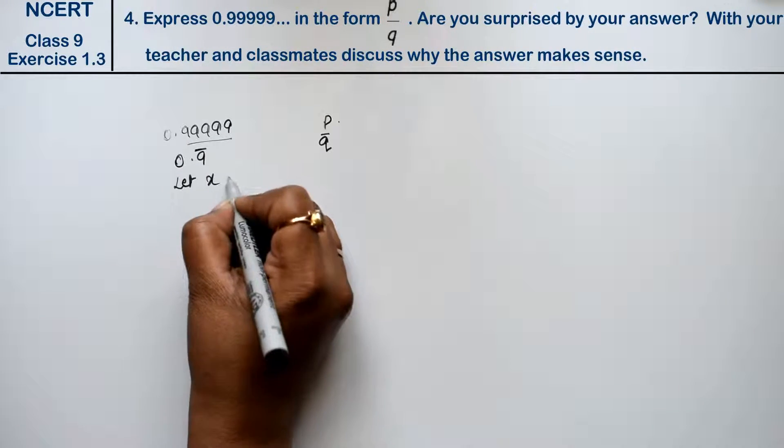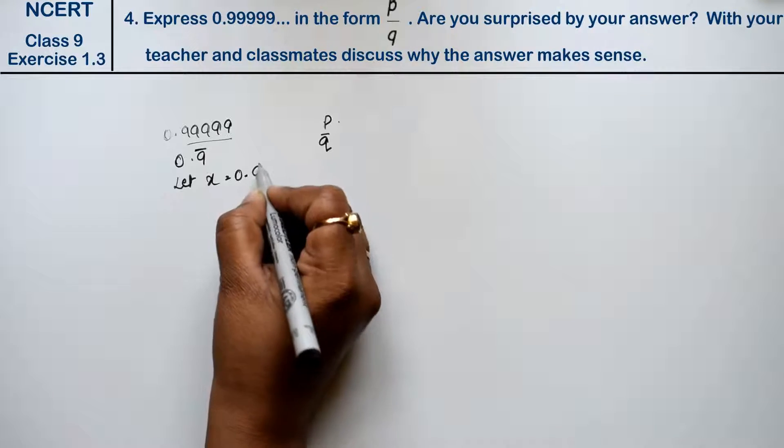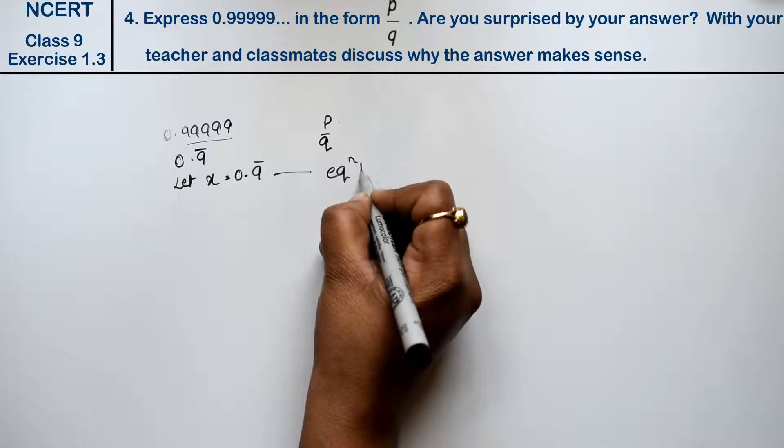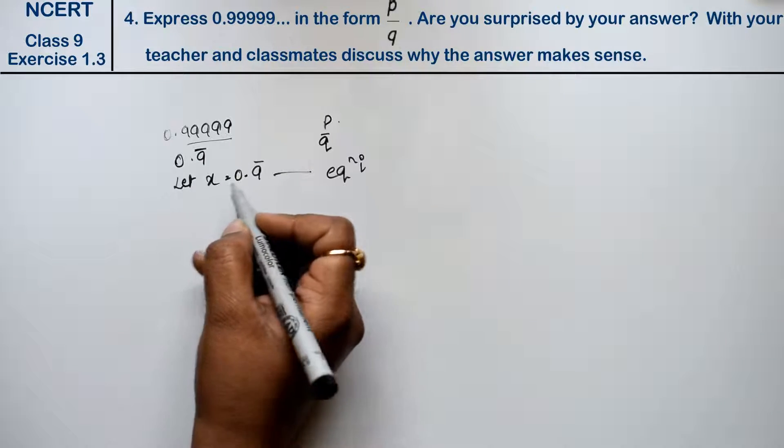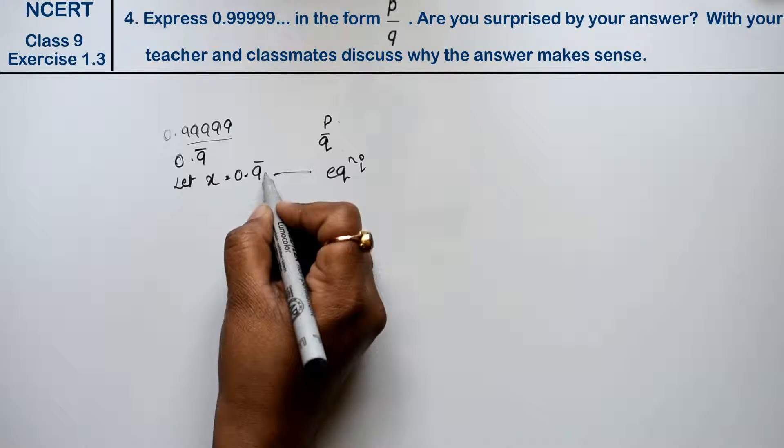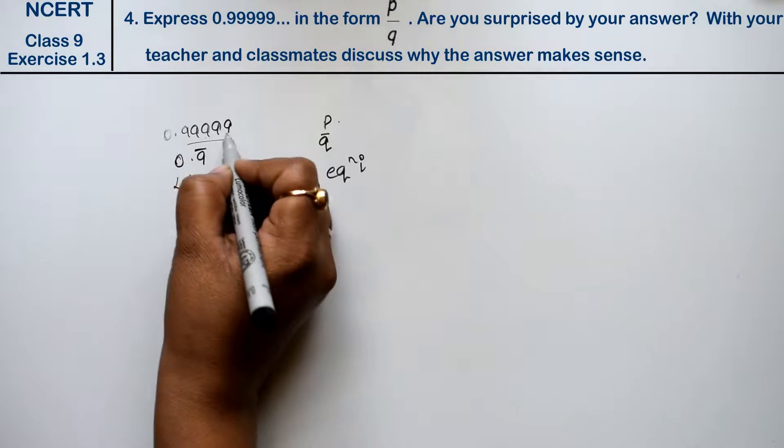Now we have to put this point here, because only one digit is repeated. That is why one digit is repeated.